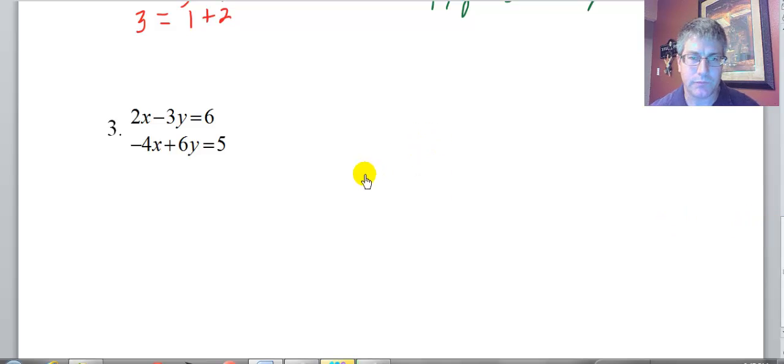So welcome back. Thanks for doing that. And let's do our final sample problem here. 2x minus 3y equals 6, negative 4x plus 6y equals 5. We want to solve one of these for either x or y. I'm eyeballing the top one. Let's go ahead and solve that for y.